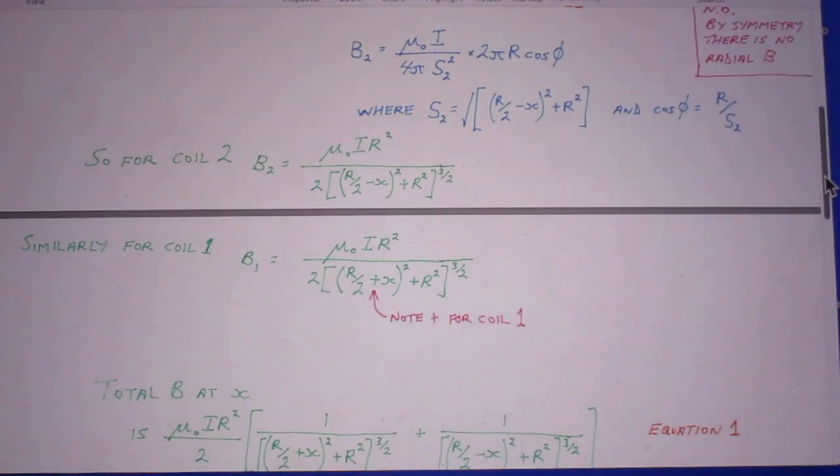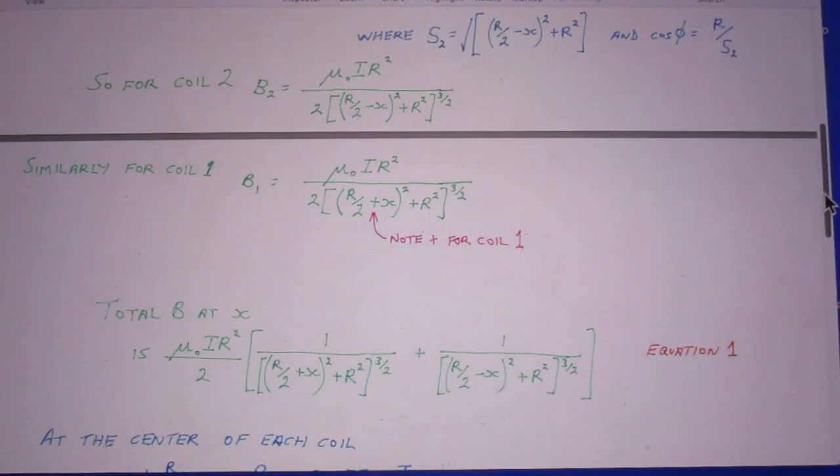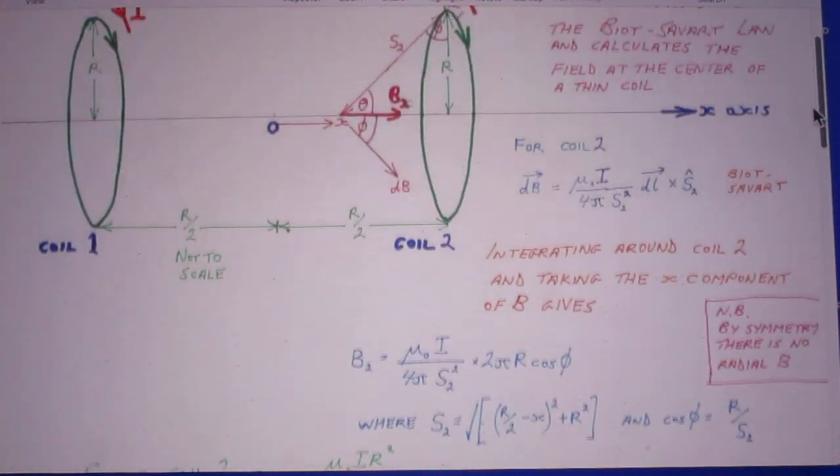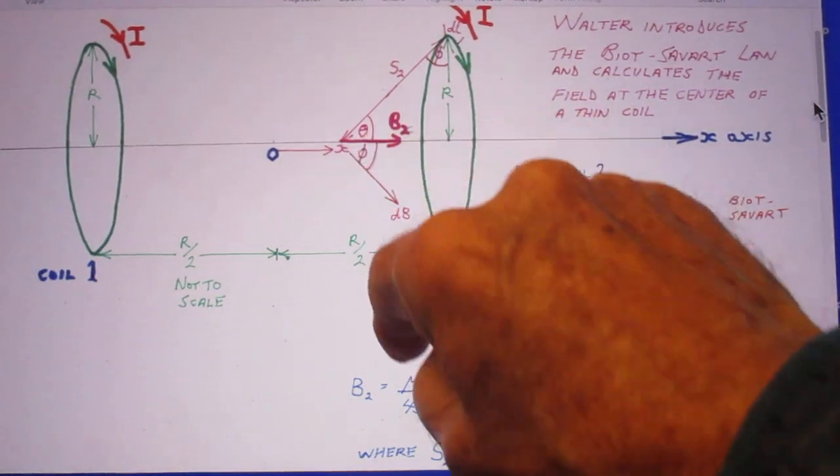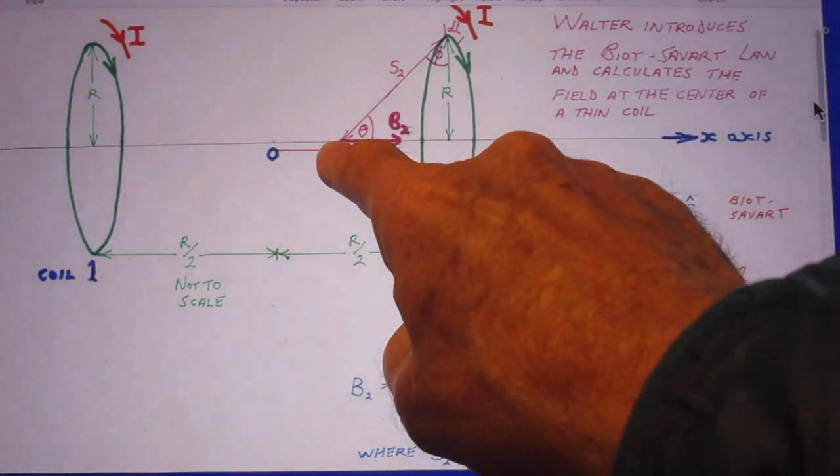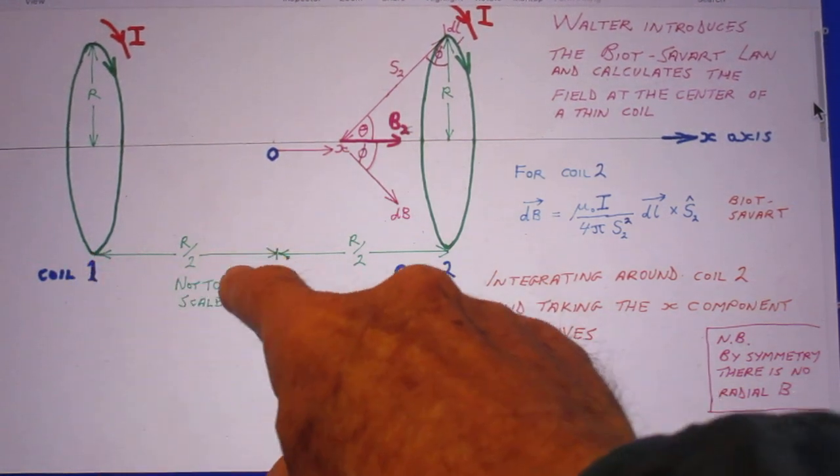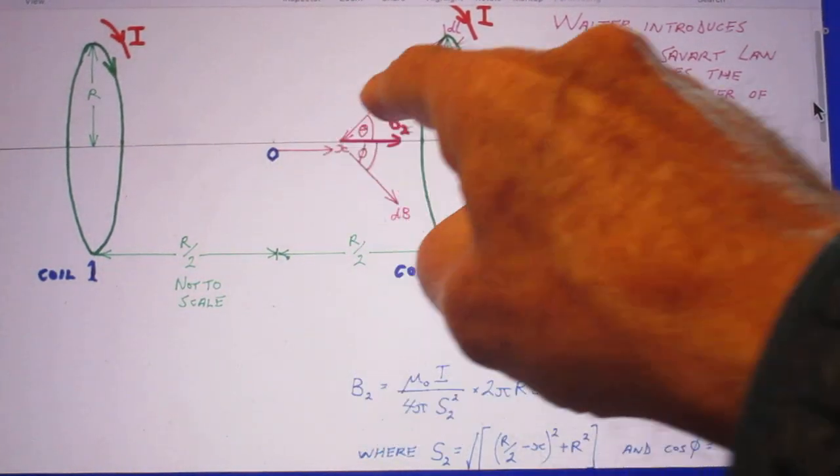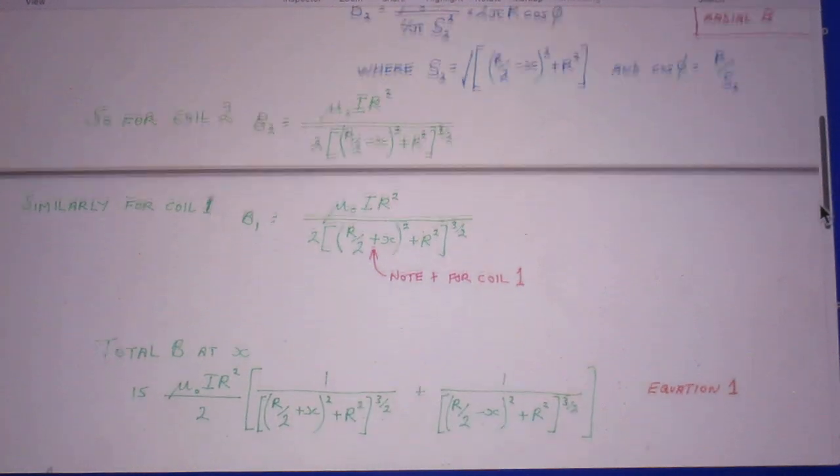So he finds B₂ and he finds B₁. But be careful now because when you hear that location is r/2 plus x, and so he points that out.